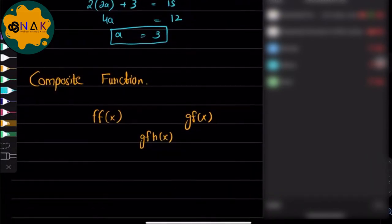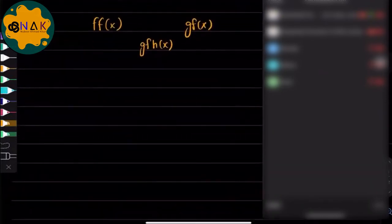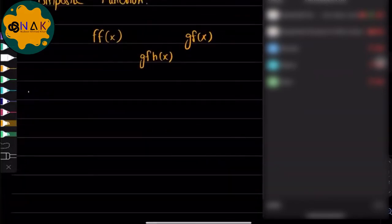So how do we solve these composite functions? Let's do an example for that one. Let's say f(x) equals 5x minus 1, g(x) is equals to 3x. Let's do this one.